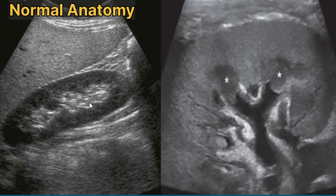The central renal sinus is composed of fibro-fatty tissues that appear echogenic on the sonogram. The cortical echogenicity of the kidney should be equal to or slightly less than that of the liver, and substantially less than that of the spleen.